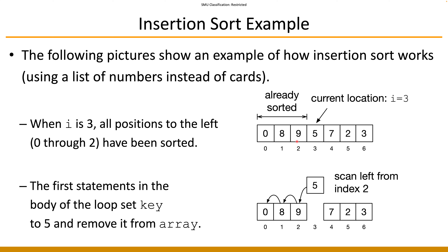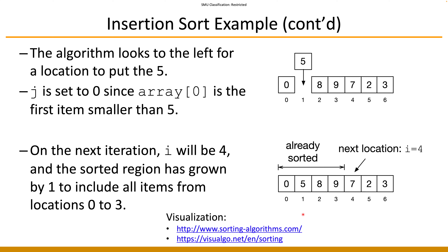We pick up the key, which is five, and scan left — we compare against nine, against A, against zero — then we do the insertion in between zero and five. That is the right place to insert element five. We insert five and put it down, and now everything from index zero to three is sorted, whereas previously only zero to two was sorted.